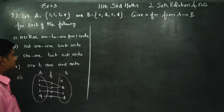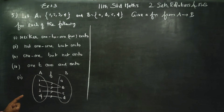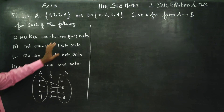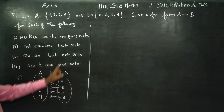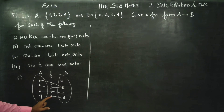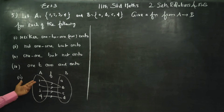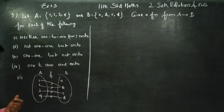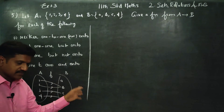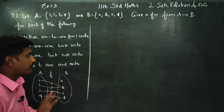This is the best example where we can tell a function that does not satisfy the one-one condition as well as the onto condition. But this is still a function. Why is it a function? Because all the elements have unique images — every element in A has a unique image.